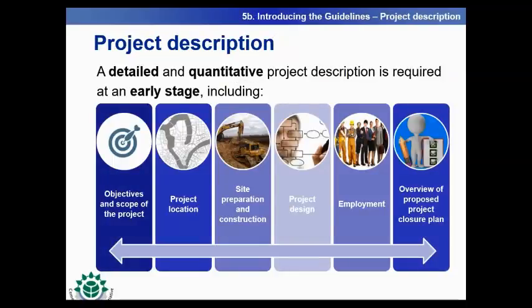Before continuing with a more detailed presentation of the different phases, a detailed and quantitative project description is required at the very early stage before any ESIA process initiates. The project description should include the objectives and scope of the project, the project location, the method statement for site preparation and construction, the detailed project design and operation, the required deployment, and an overview of the proposed closure plan or decommissioning.